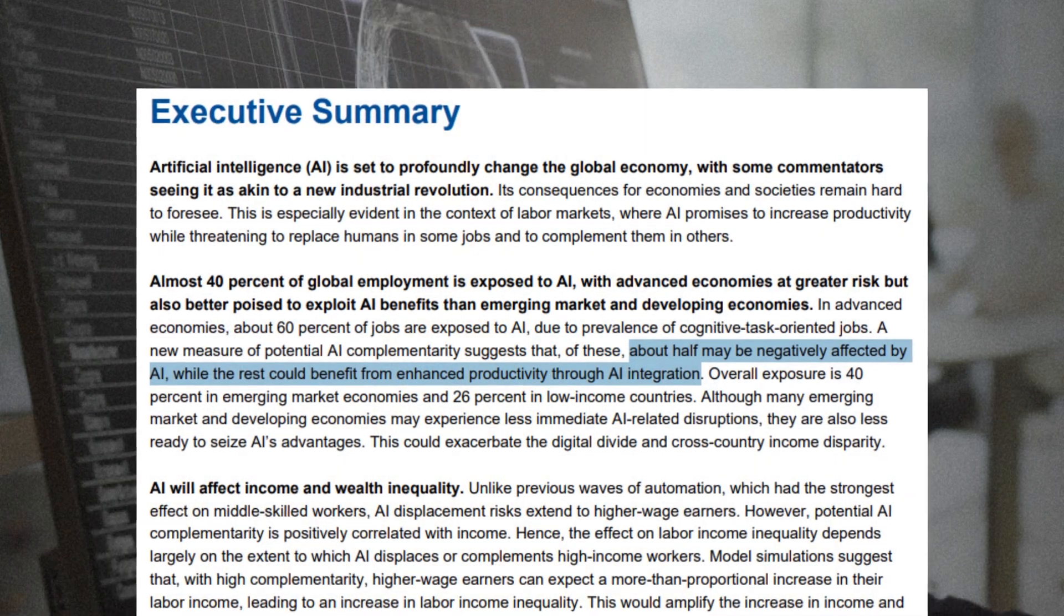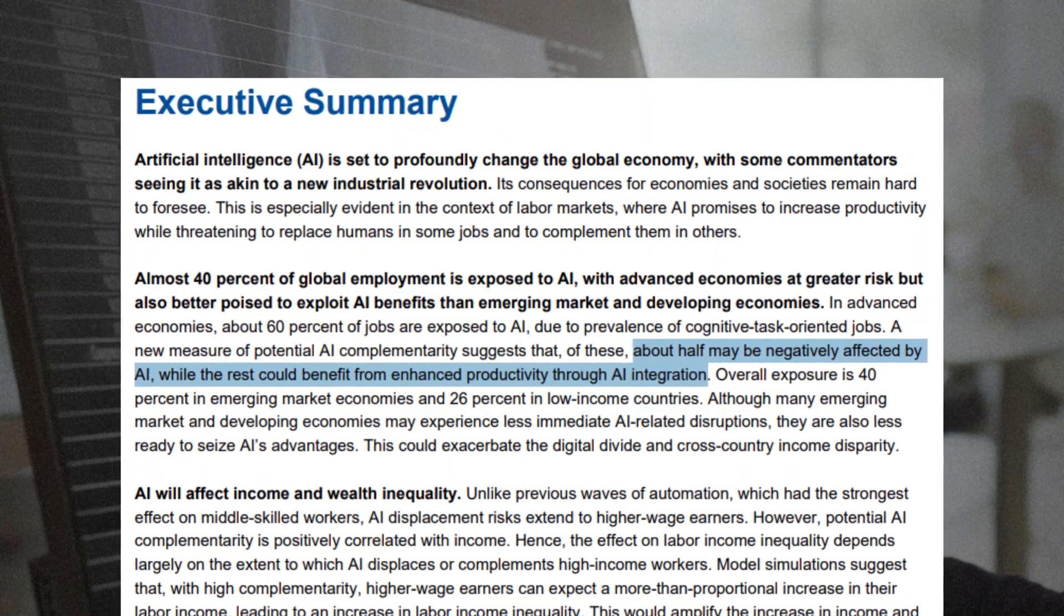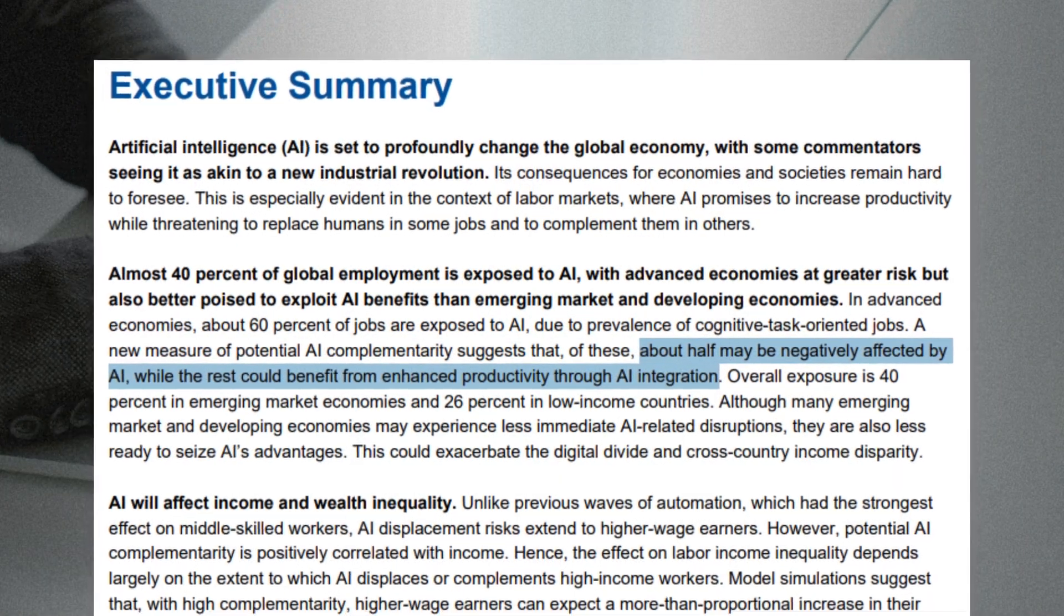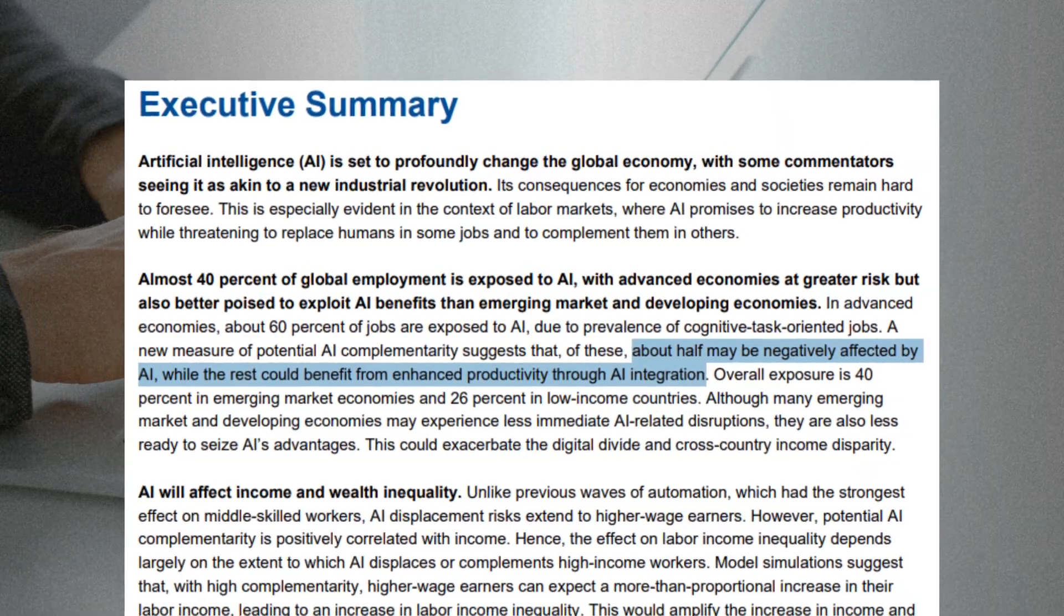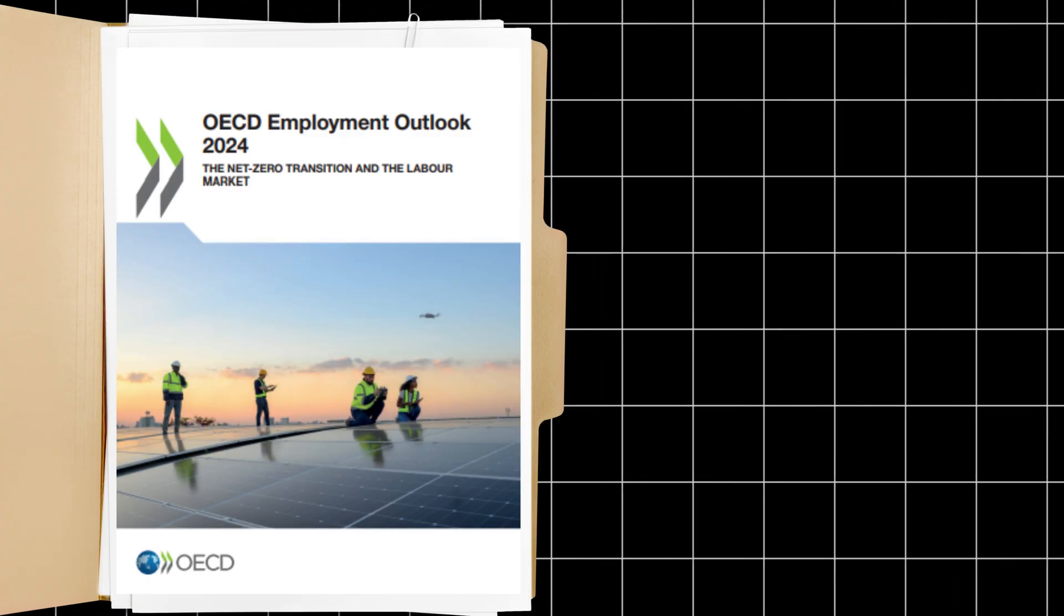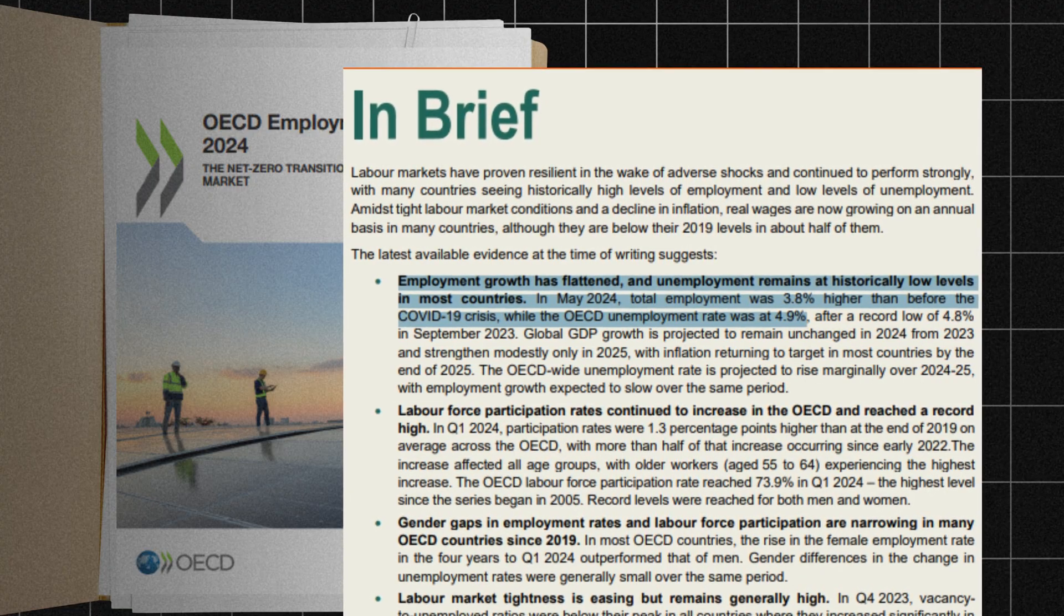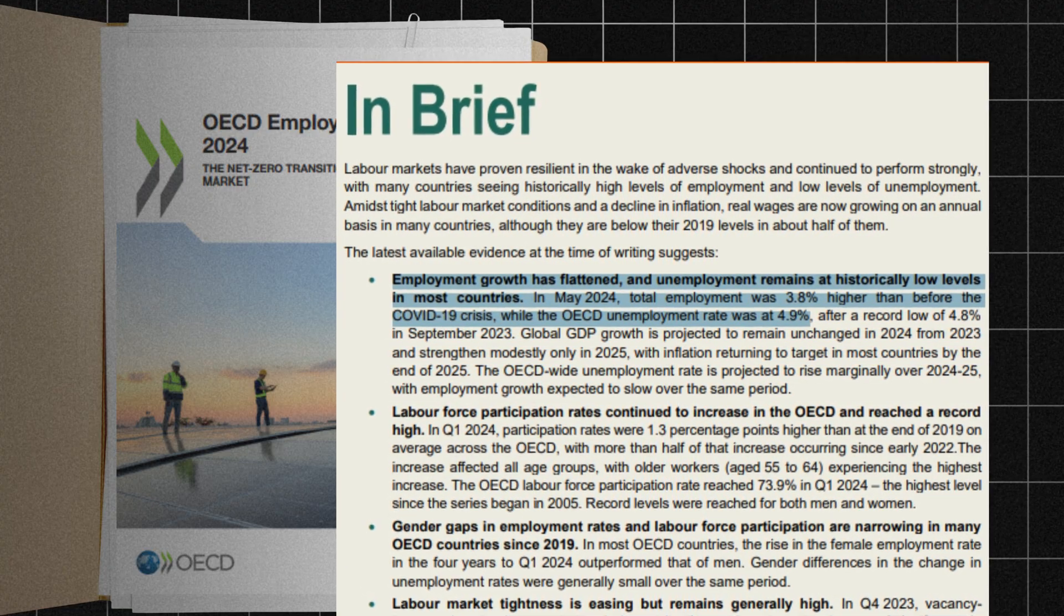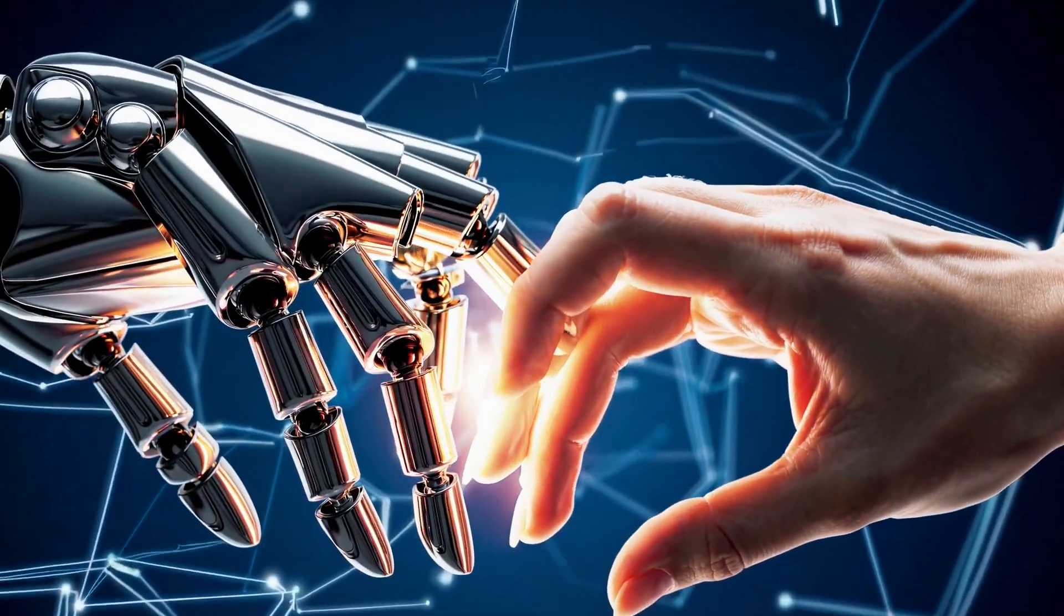The IMF also explains that roughly half of the exposed jobs are likely to benefit first through faster output, while the other half may feel pressure on repetitive tasks, sometimes lowering demand for those tasks over time. As reported in the OECD Employment Outlook, 2024, unemployment across the OECD stayed low, around 4.9% in mid-2024, which tells us we're seeing a remix of tasks, not a sudden collapse of work.